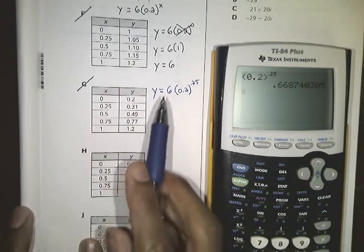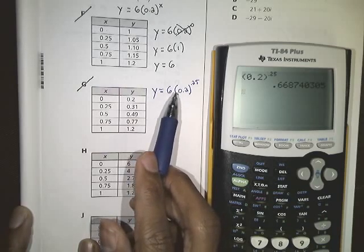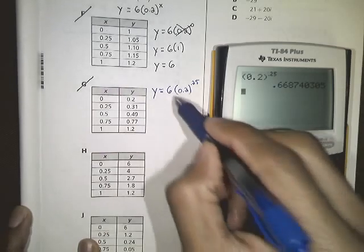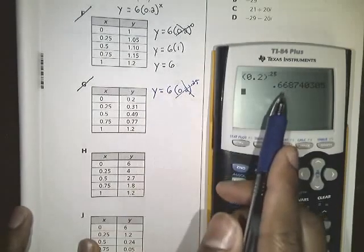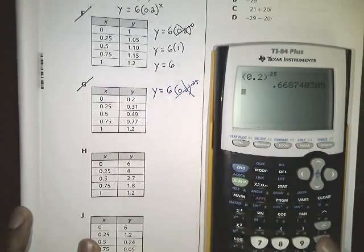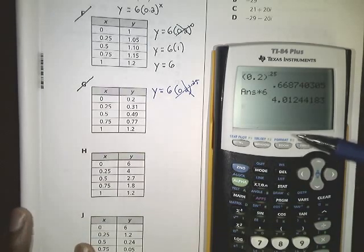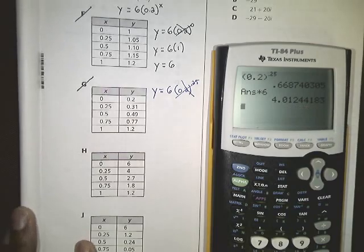Well, we all knew here we were supposed to multiply that value by 6. So we figured out what this was, and then we now need to multiply that value by 6. So if we multiply by 6 and press enter, you're going to get 4.01.